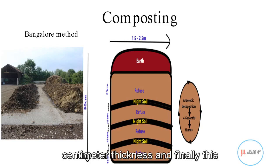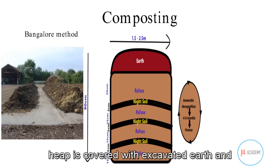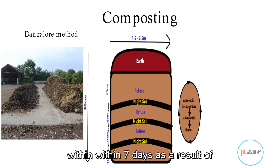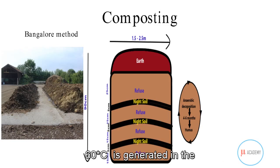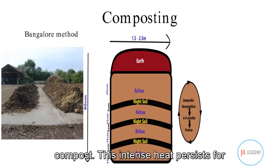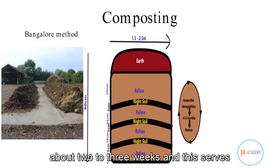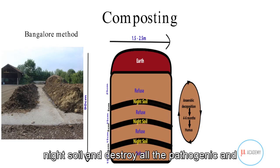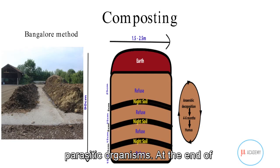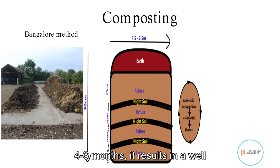The top layer should be refuse of at least 25 centimeters thickness, and the heap is then covered with excavated earth. Within seven days, bacterial action generates considerable heat of over 60 degrees Celsius in the compost. This intense heat persists for two to three weeks, decomposing the refuse and night soil and destroying all pathogenic and parasitic organisms.